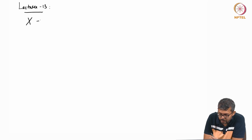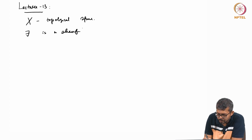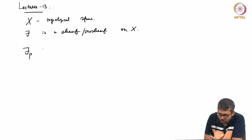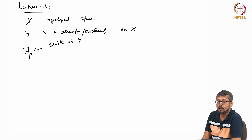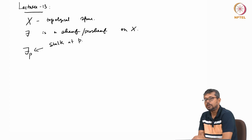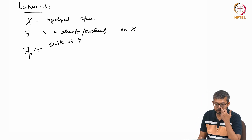Recall, if x is a topological space and f is a sheaf on x — in fact, for a pre-sheaf also you can define — I want to define what is called the stalk of f at p, stalk at p. Have you seen the definition of the stalk of a germ of a function in complex analysis, or differential geometry, or differential topology? It is very similar to that.